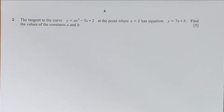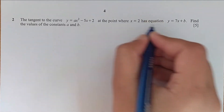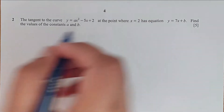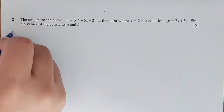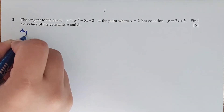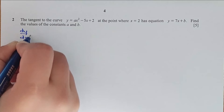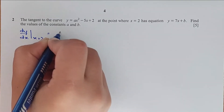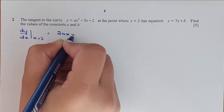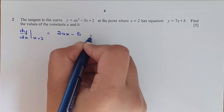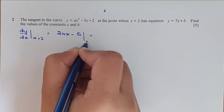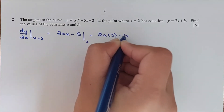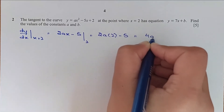Question number 2. The tangent to the curve at a point where x is 2 has an equation — find the values of a and b. For the equation of tangent, first we have to find the gradient dy/dx at x equals 2. So we have 2ax minus 5. When x equals 2, we have 2a times 2 minus 5, which equals 4a minus 5.